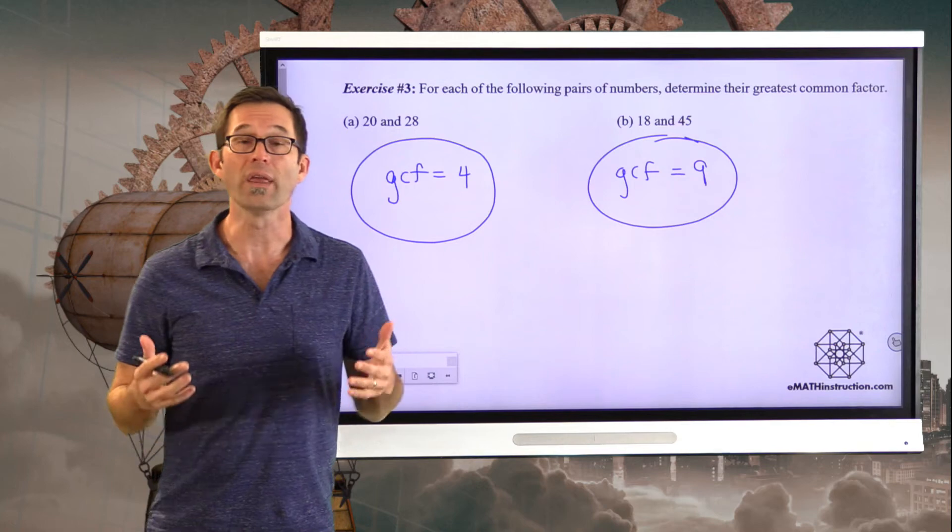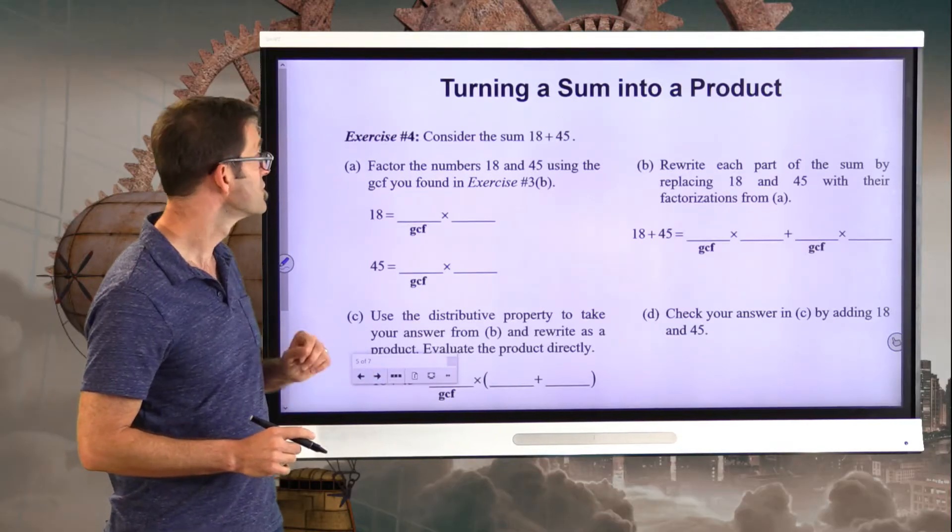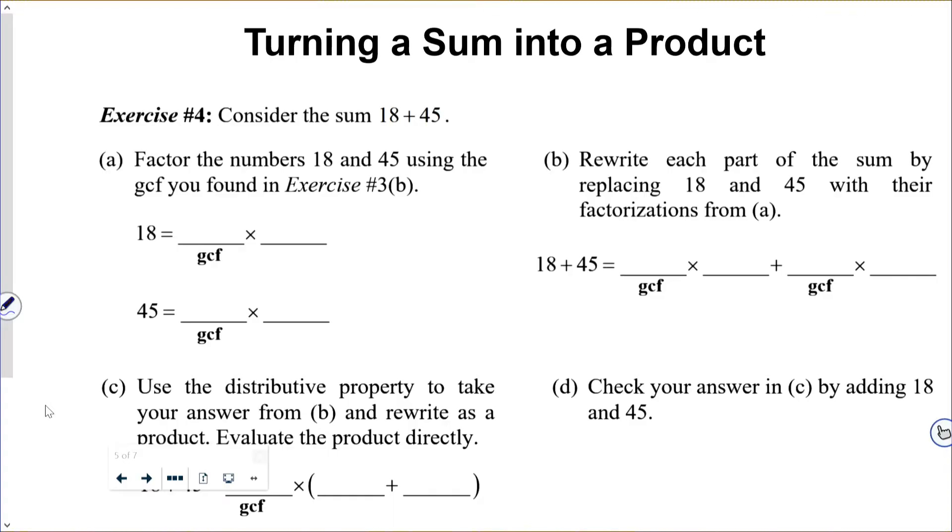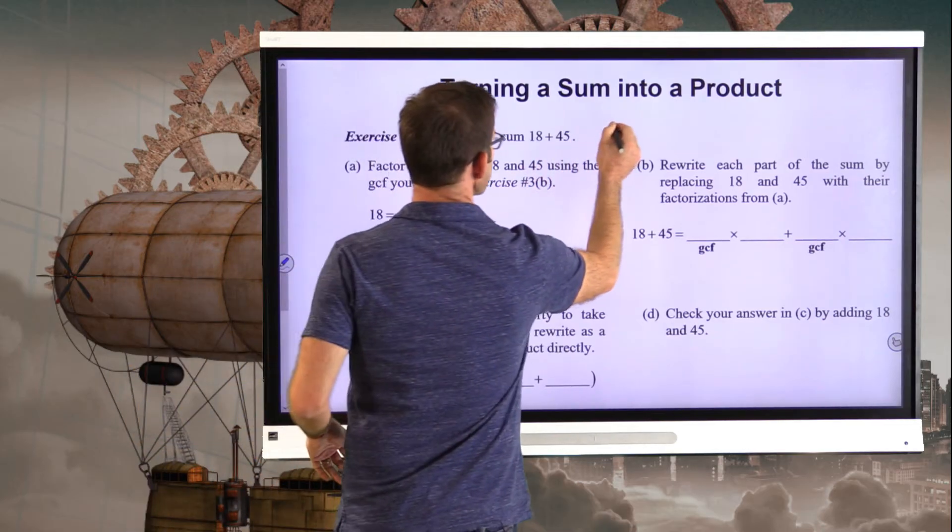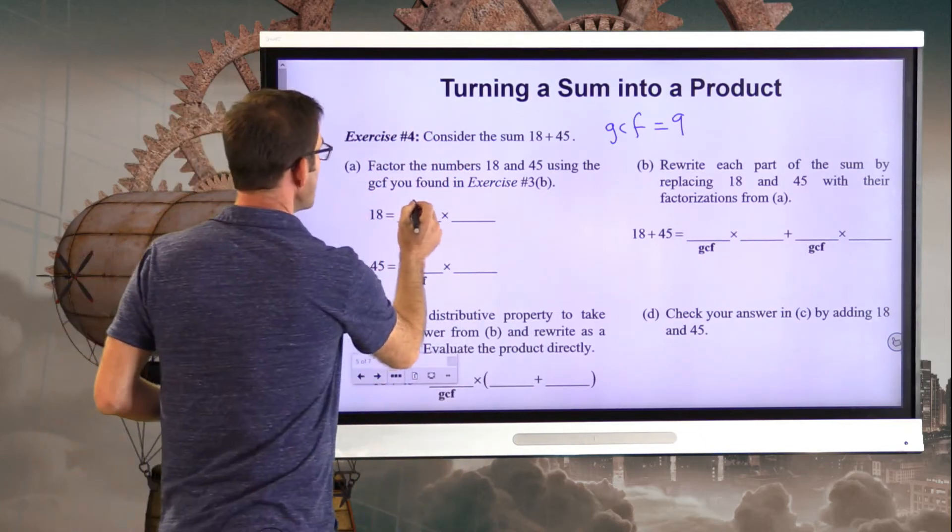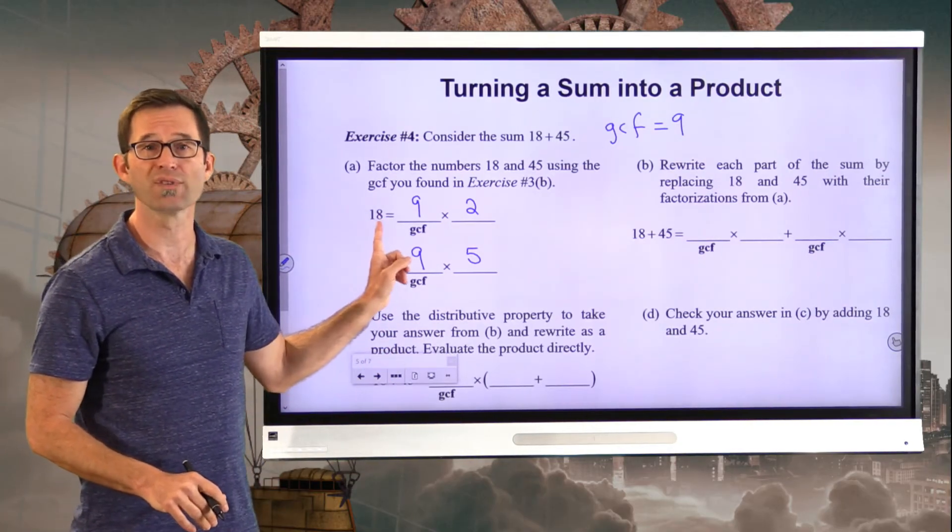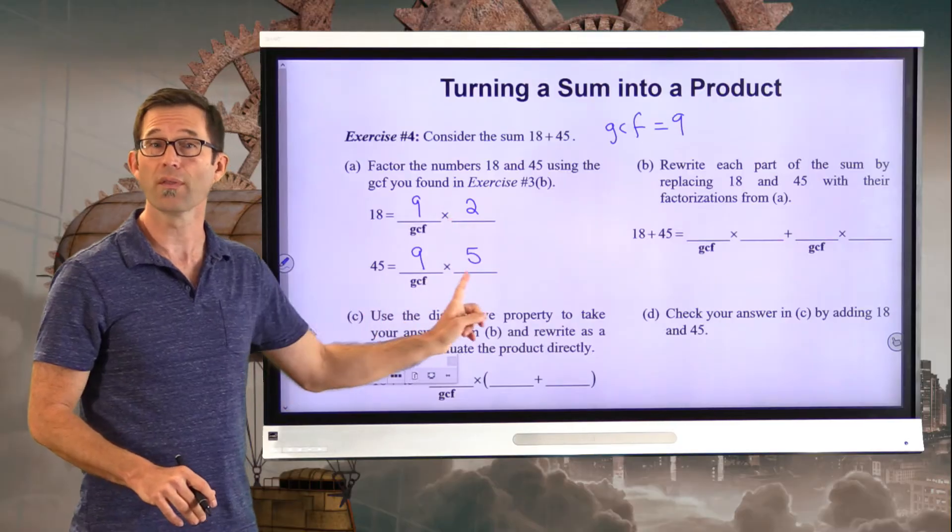So let's see how we can now use GCFs to turn sums into products. Exercise number four. Consider the sum 18 plus 45. So those two numbers, 18 and 45, might look a little familiar. Letter A asks us to factor the numbers 18 and 45 using the GCF that we found in exercise 3B. Remember, the GCF of these two numbers was equal to 9. We figured that out in the last problem. So we can rewrite 18 as 9 times 2, and we can rewrite 45 as 9 times 5. No big deal. Remember, all we're doing is replacing the numbers 18 and 45 with something that's equivalent, an equivalent product.